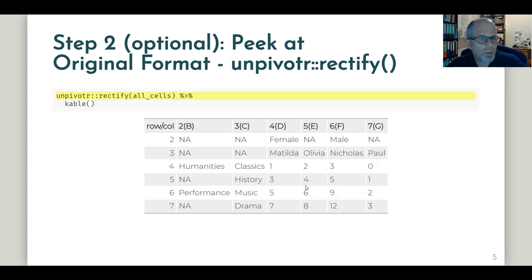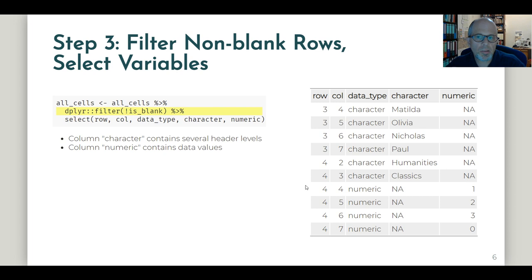Right, but how do we process this further? So the next step is to just filter non-blank rows and select variables. There's no tidyxl or unpivotr magic here, just plain dplyr code or tidyverse code.